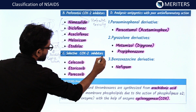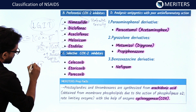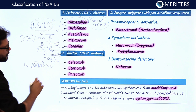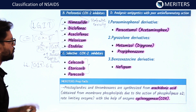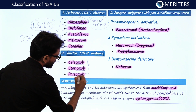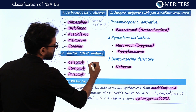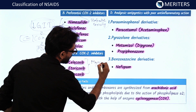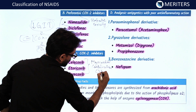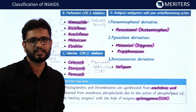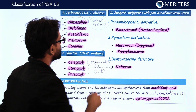Selective COX-2 inhibitors do not affect COX-1 at all, giving total GIT protection with much lesser GIT side effects. The drugs in this category are celecoxib, etoricoxib, and parecoxib — all containing 'coxib' in their name. However, these drugs are found to have more myocardial complications and increased risk of cardiovascular disease and myocardial infarction, which has led to some of them being banned.